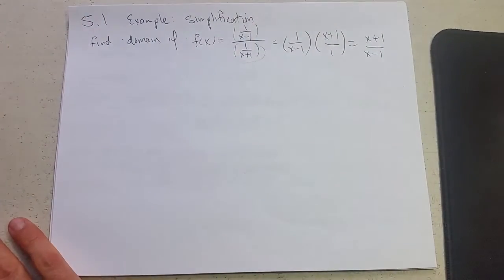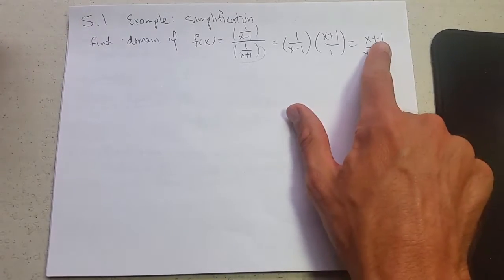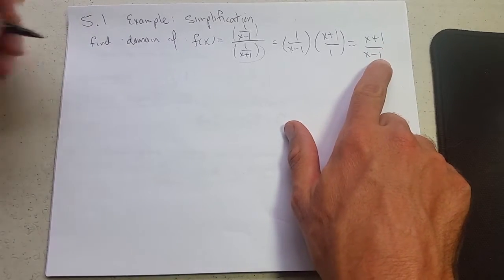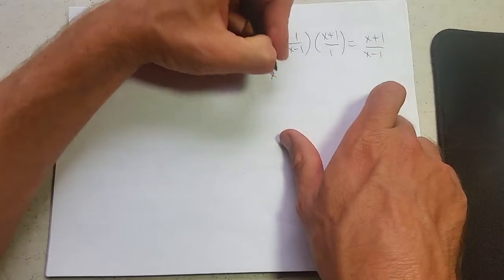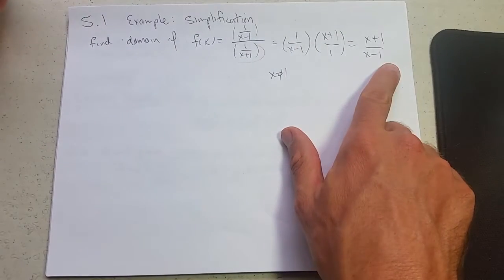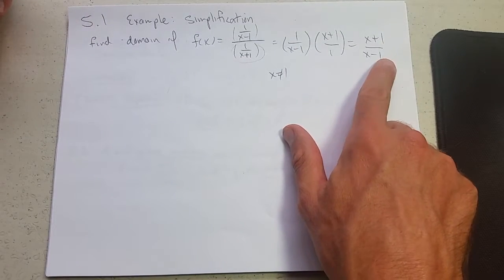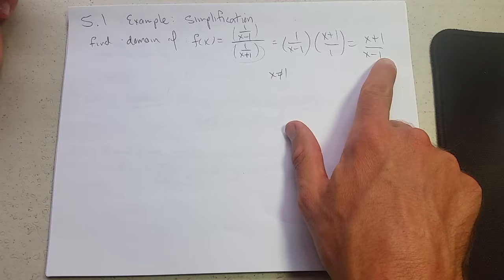Right here, if I look at what is the domain, well if you just look at this, don't let x equal one. So one is a bad x value. If I look here, is that the only bad x value?